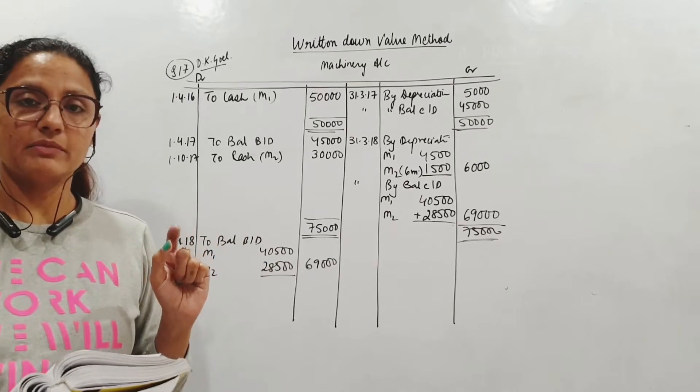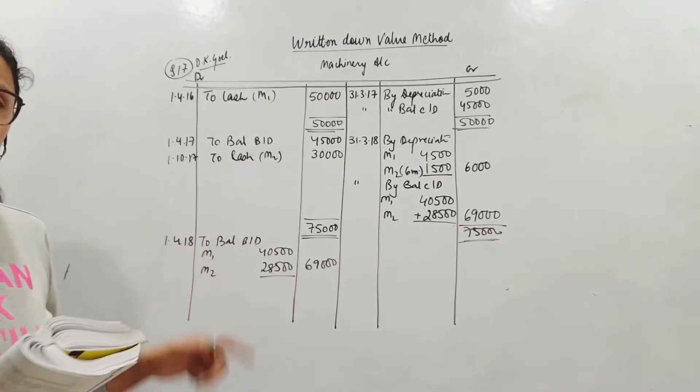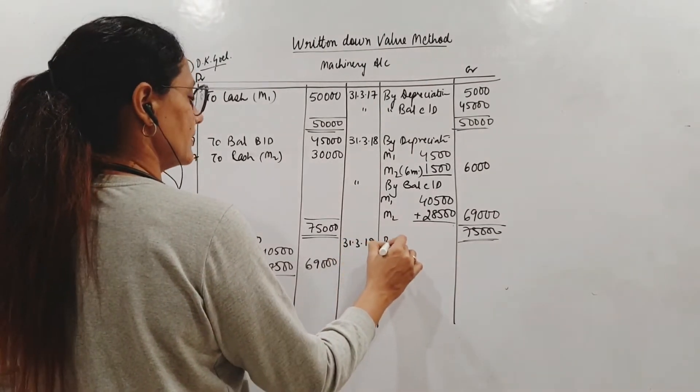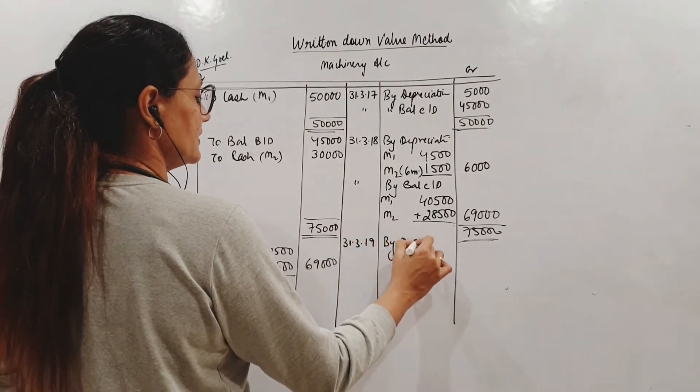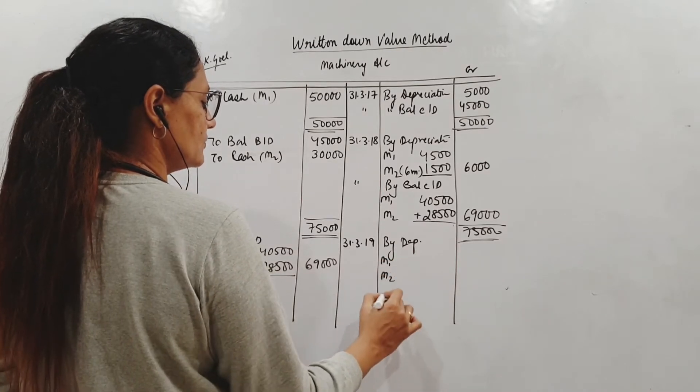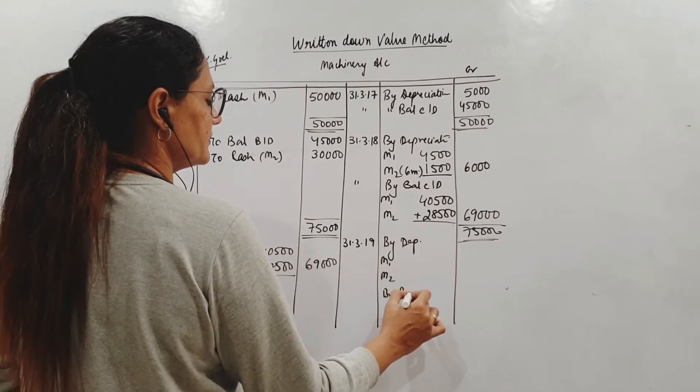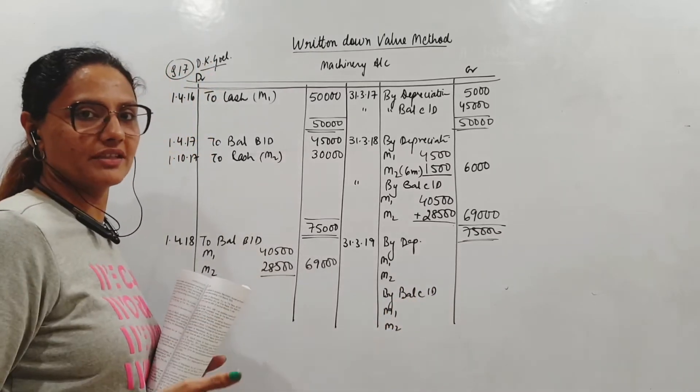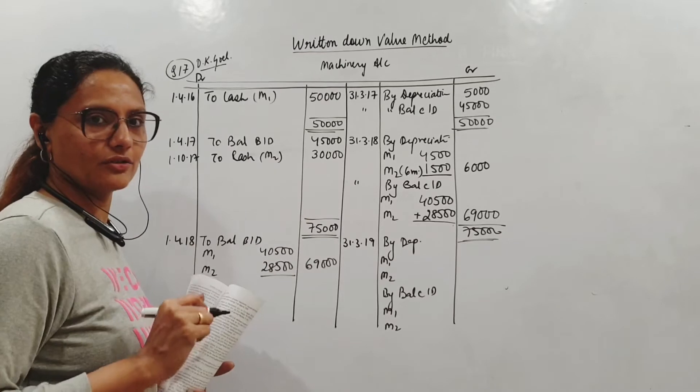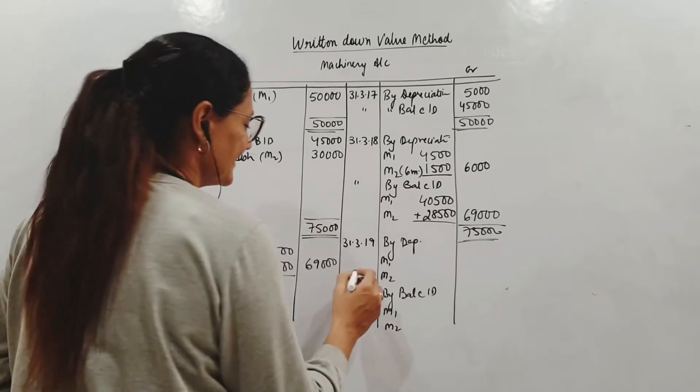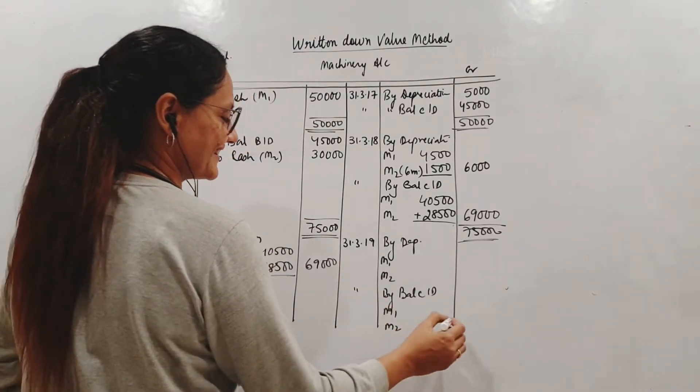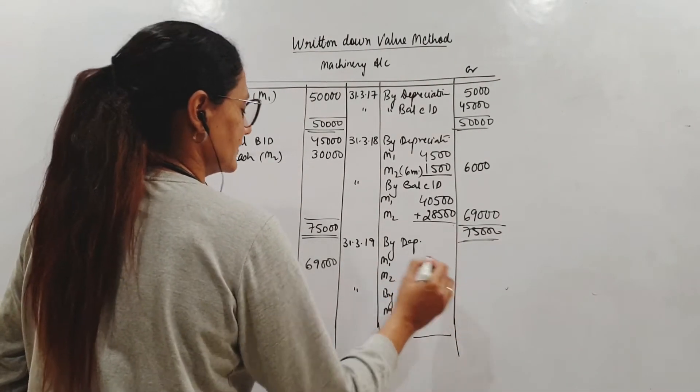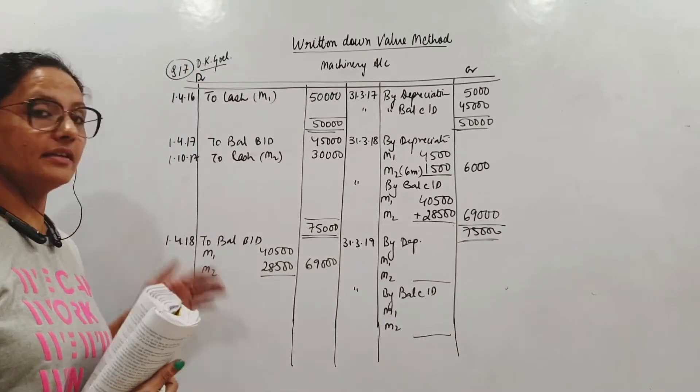Bring down the balances. To balance brought down M1 and M2 respectively total 69,000. 1st April 18. So this is done. Now what is happening in this year? Let us see. 1st April 18, 31st March 19. Nothing. Because the next sale is in the fourth year. As it is being sold on 30th September 2019 which will not be in this year. So this year again we just have a depreciation.